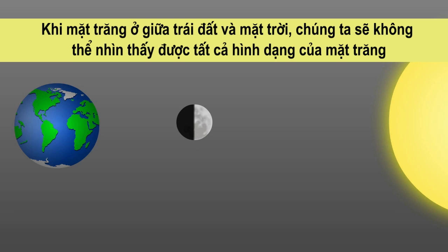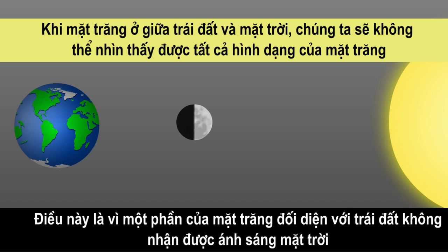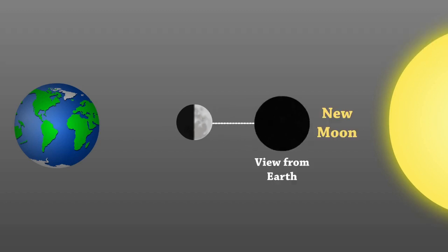When the moon is between the earth and the sun, we cannot see the moon at all. This is because the side of the moon facing the earth does not get sunlight. This is called the new moon.